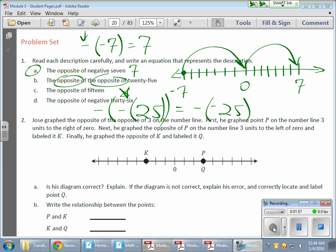And as you can see, if I want the opposite of the opposite of 25, you're just going to wind up with 25 again, because my two opposites bring me right back to where I started from the beginning.